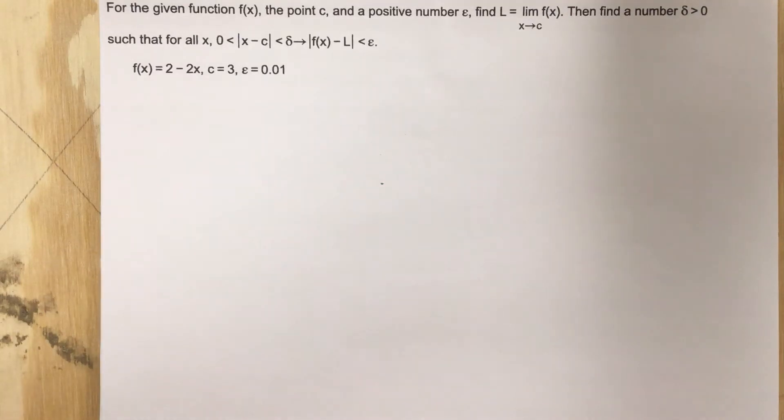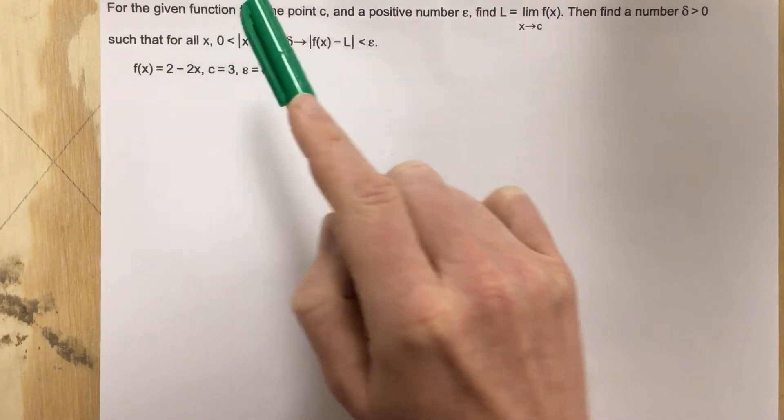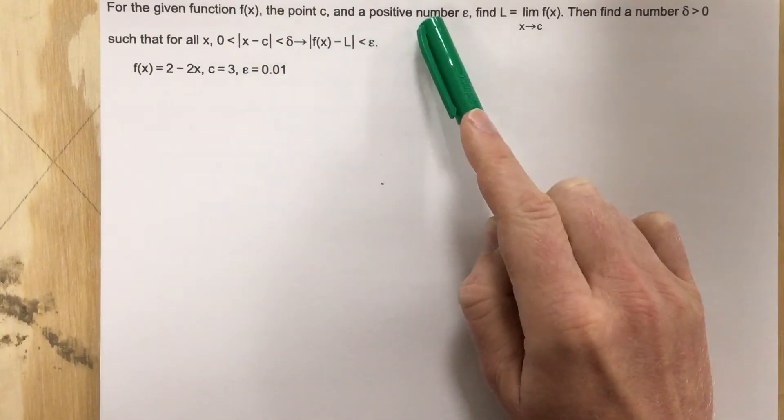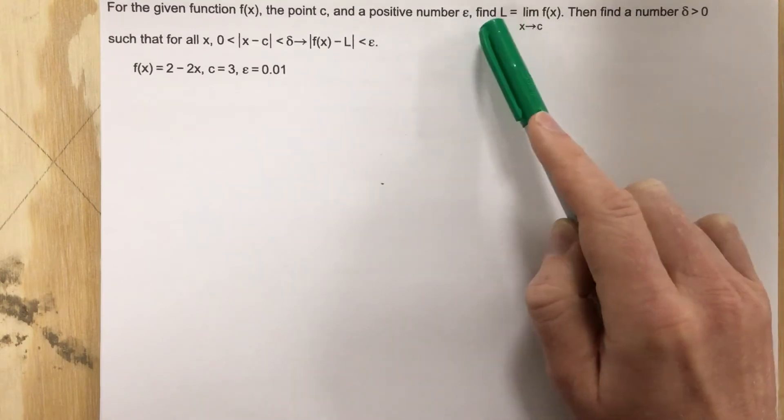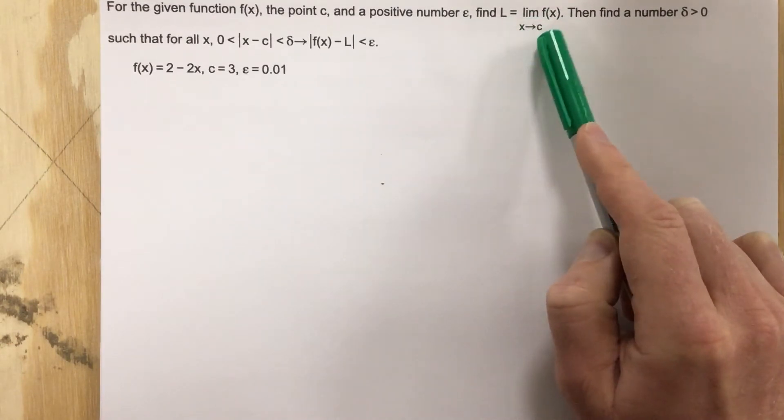This is problem number 8 from section 2.3. In this problem it says for the given function f of x, the point c and a positive number epsilon,